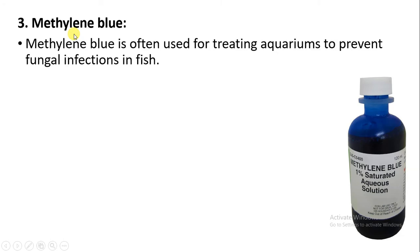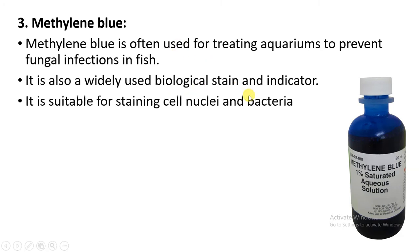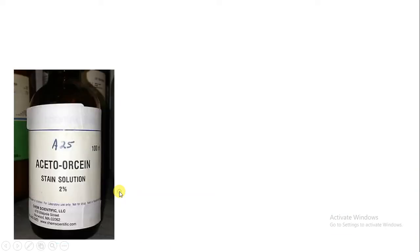The next stain is methylene blue. Methylene blue is often used for treating aquariums to prevent fungal infections in fish. It is also widely used by biologists as a biological stain, and it is also used as an indicator. It is suitable for staining cell nuclei and is also used for staining the nuclei of bacteria.